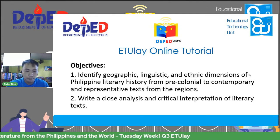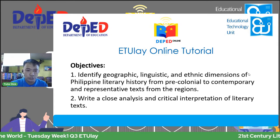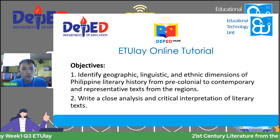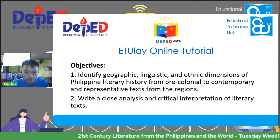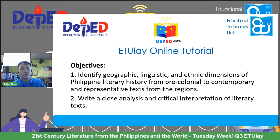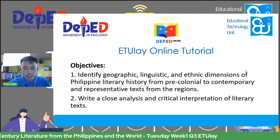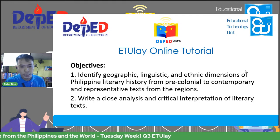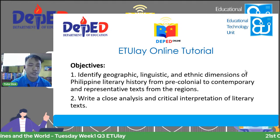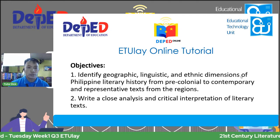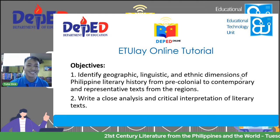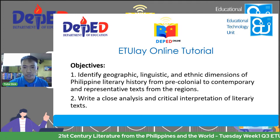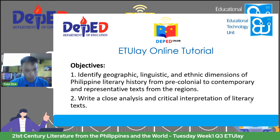We'll be choosing some representative texts — I chose region one today. Again, number one is identify geographic, linguistic, and ethnic dimensions of Philippine literary history from pre-colonial to contemporary and representative texts from the regions. And the second one would be to write a close analysis and critical interpretation of literary texts. Are you ready to go with me on a stroll down memory lane in our Philippine literary history?